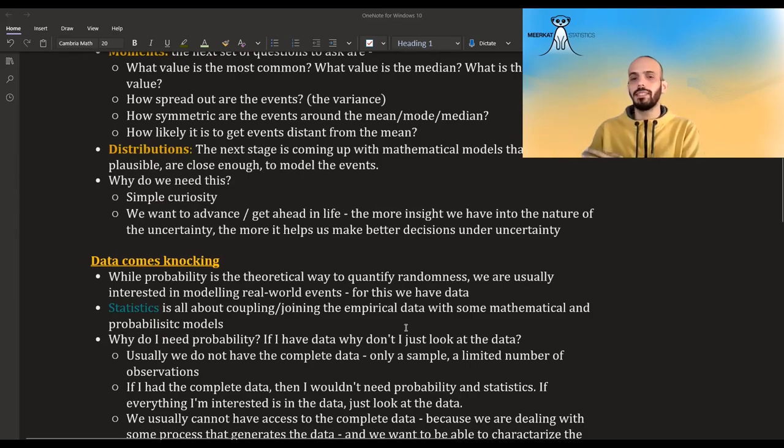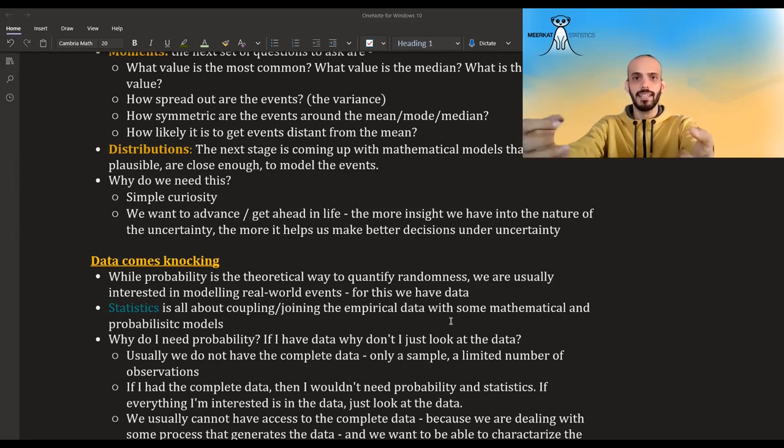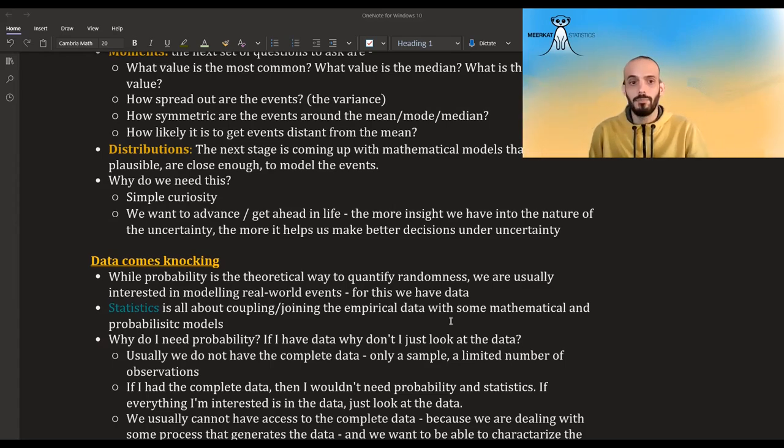Okay, so this whole thing was probability. But probability is basically this theoretical way to quantify randomness. Usually, we are interested in real world events, right? It's usually not that we are thinking theoretically about some possible ways that uncertainty can manifest itself and then we are coming to nature and saying, oh yes, this is how this kind of events, they fit this theoretical thing I thought about before. No, usually, it's the other way around. We are looking at nature, and we are taking the empirical data that we see from nature, and we are trying to fit to it some approximated model, some probabilistic model that we think can capture the behaviors of this process that we see in nature the best. So statistics is all about this coupling and joining of empirical data with the probabilistic models together.